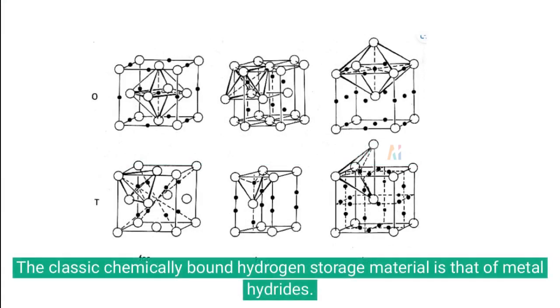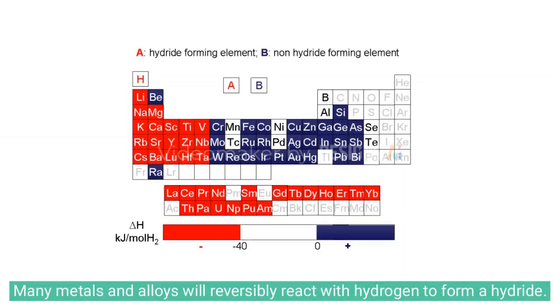A classic chemically bound hydrogen storage material is that of metal hydrides. Many metals and alloys will reversibly react with hydrogen to form a hydride.